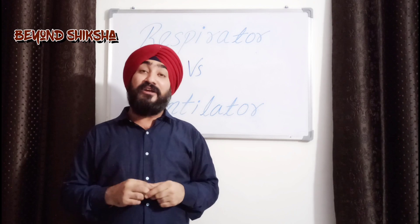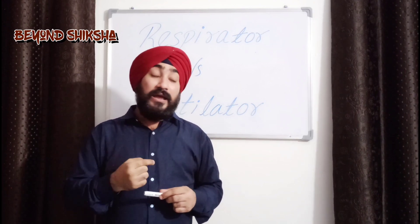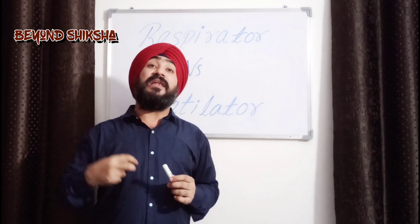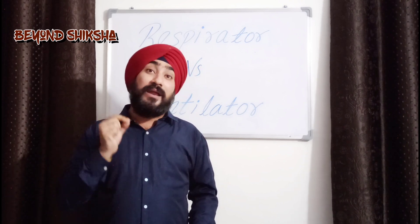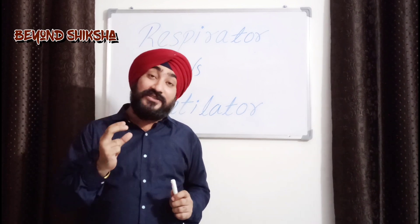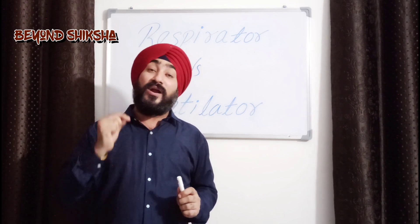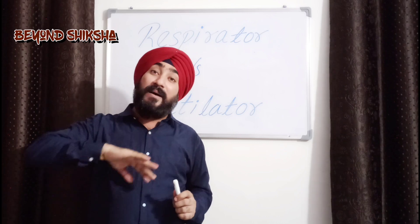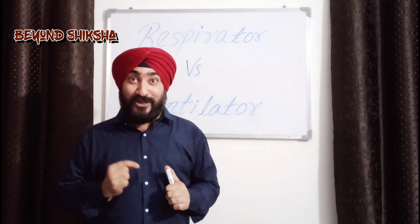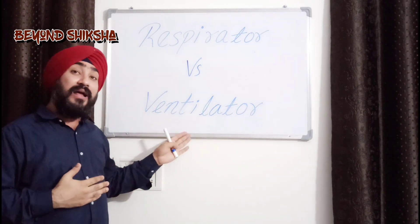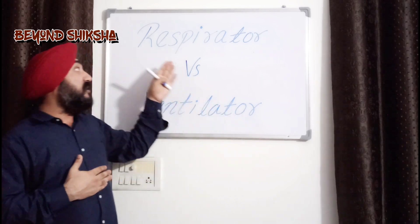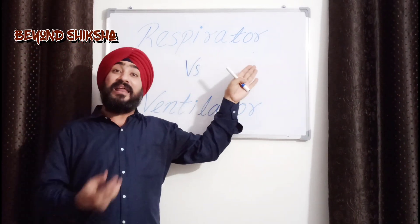Another term is ventilator. A ventilator helps the patient who cannot breathe on their own. It pumps oxygen into the body and removes carbon dioxide. We use this machine when a patient cannot take a breath on their own. So the difference is very clear: the ventilator helps the patient breathe, while the respirator helps prevent inhaling something unhealthy.